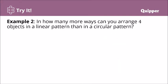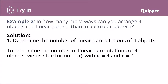Example number two: in how many more ways can you arrange four objects in a linear pattern than in a circular pattern? Here we are going to compare how many ways we can arrange four objects using linear permutation versus circular permutation, and find the difference between the two. First, we determine the number of linear permutations of four objects using the formula nPr, with n = 4 and r = 4.